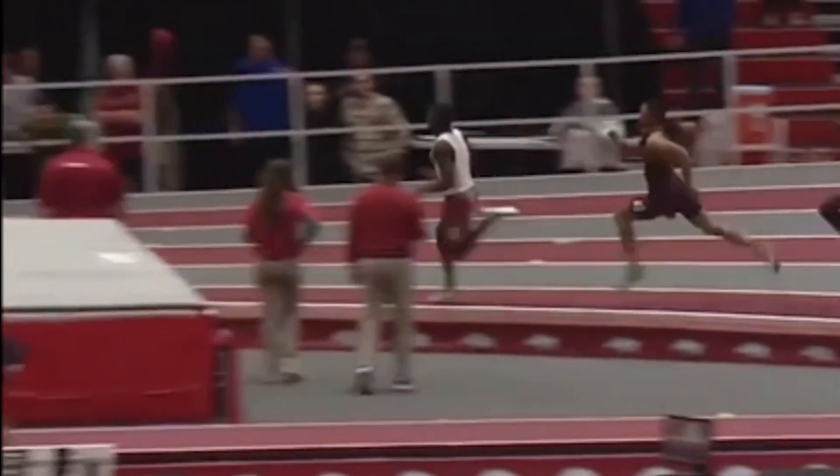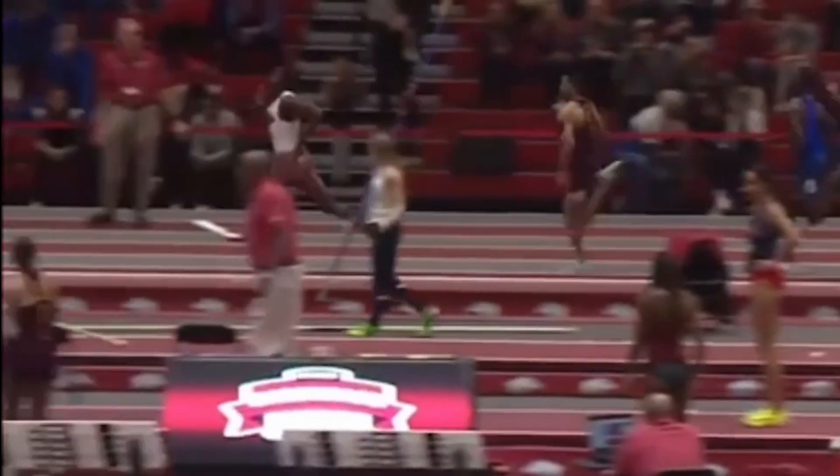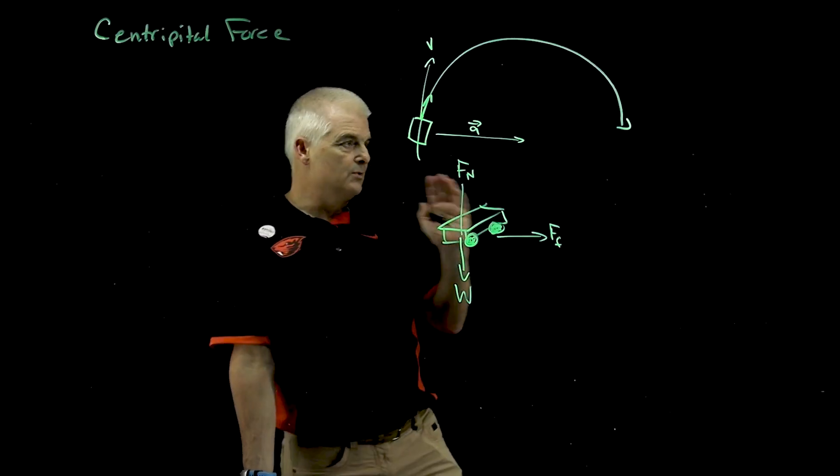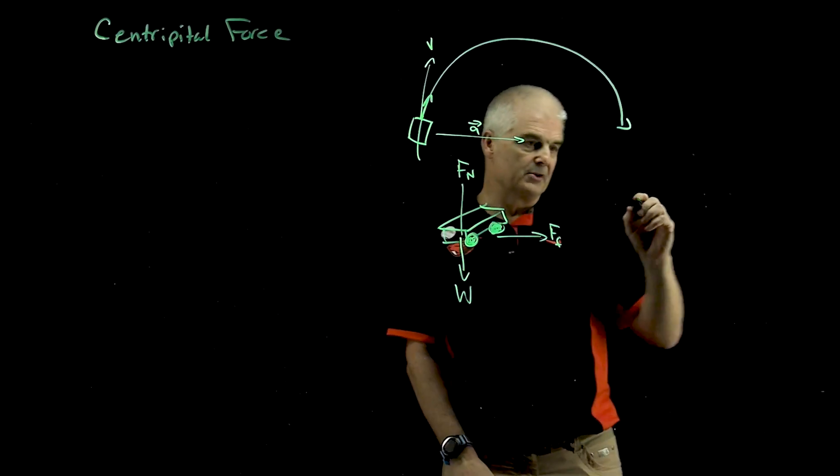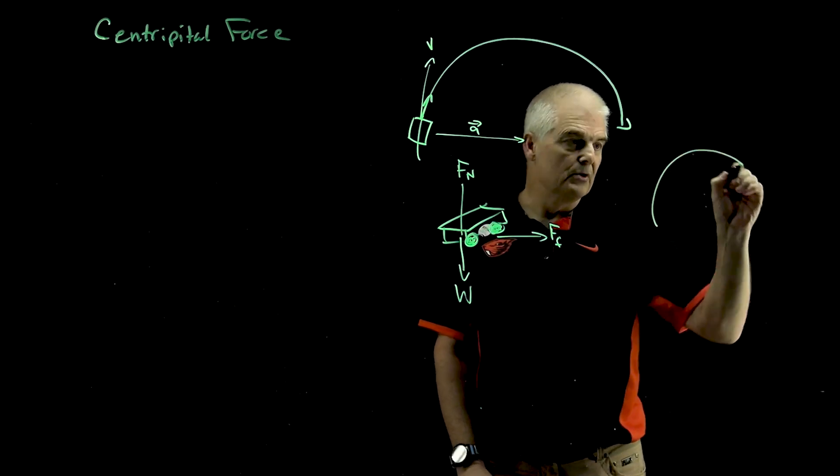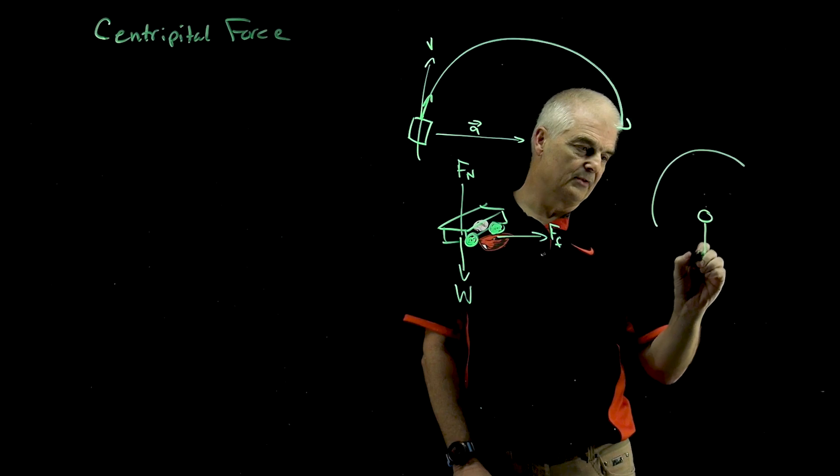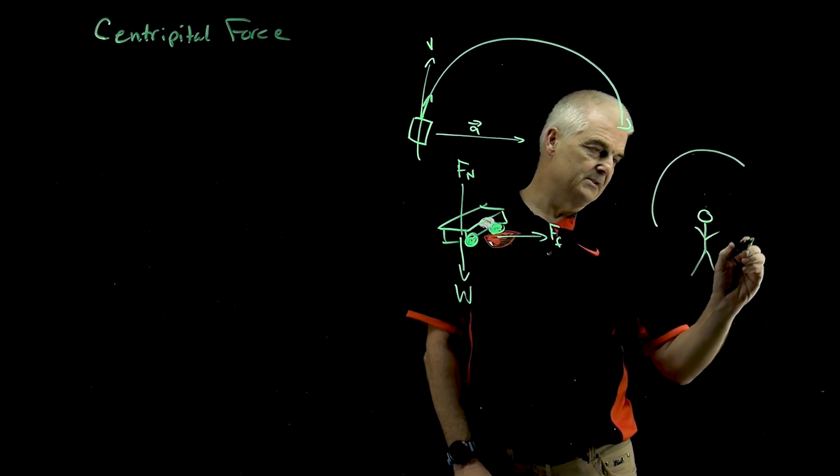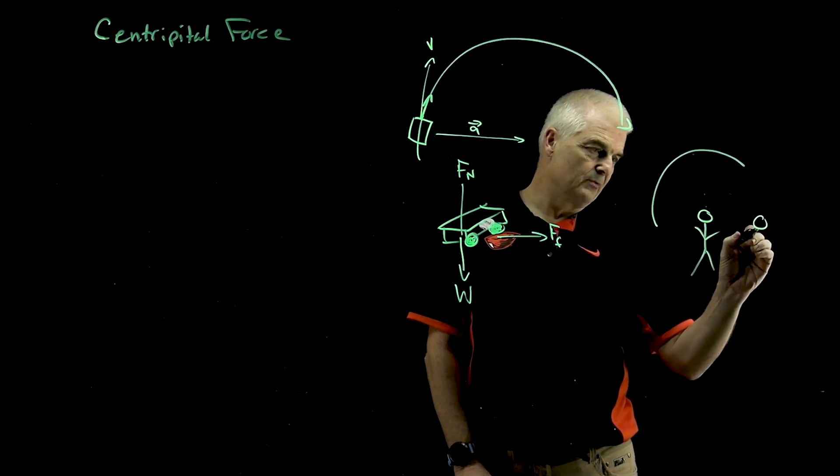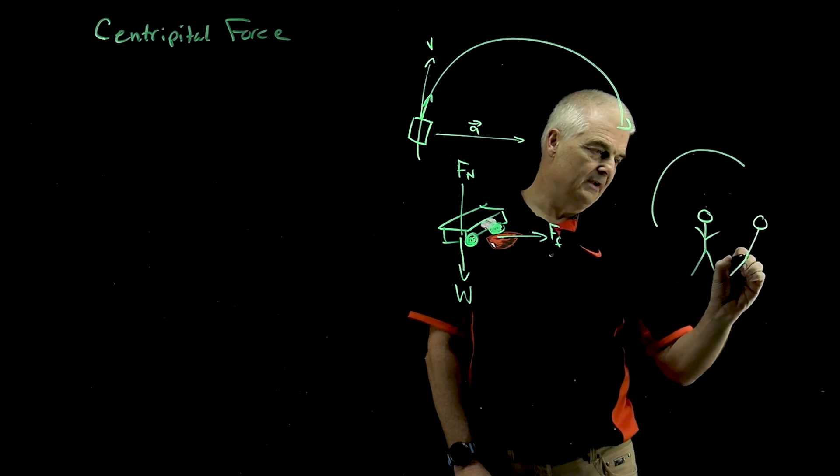Another example, take a look at this video of a runner running around the track. And if you noticed, when the runner was going around the track, again, moving in a circular motion, but if you were to look at that runner, you saw on the runner, if I've got the runner, that's them running. But the reality is, what did you notice? They're actually running at a bit of an angle, aren't they?